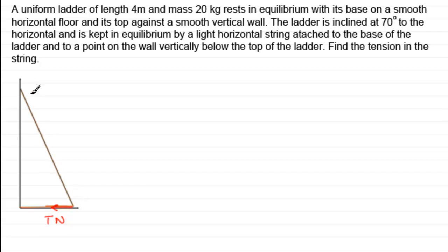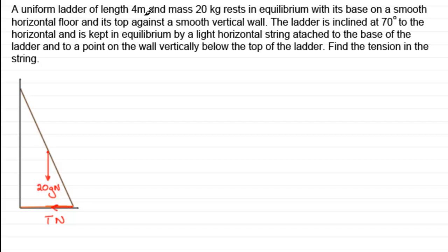What other forces act on the ladder? There's its weight. We're told it has a mass of 20 kilograms and it's a uniform ladder, so the weight acts at the middle pointing downwards. We mark that in — the weight will be mg, so that's 20g newtons. Since it's uniform and the length is 4 meters, the weight acts at the midpoint: 2 meters from each end.